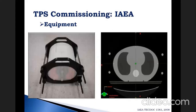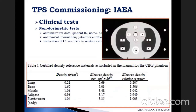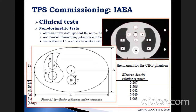You must CT scan your phantom, import the CT images into your TPS, and perform clinical tests. Non-dosimetric tests verify that administrative data, anatomical information, and patient orientation have been correctly transferred from the CT scanner to the TPS. You must also verify how the TPS converts CT numbers to relative electron density using the density reference values for the phantom inserts, and check how the TPS deals with scaling by measuring phantom dimensions and comparing to manufacturer reference values.